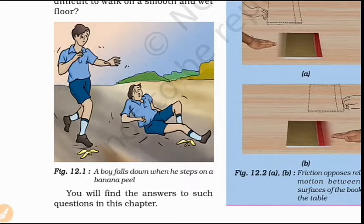On a smooth surface we still have friction. There are two types of surfaces — one rough surface and one smooth surface.